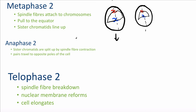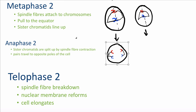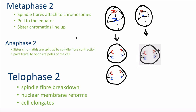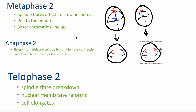In anaphase 2, the spindle fibers contract and rip the sister chromatids apart from each other. This creates a separation of all four chromosomes — we originally had two chromosomes for every number, replicated to make four, and now all four have been split apart and moved to opposite sides of the cell. These separated sister chromatids are now called chromosomes.